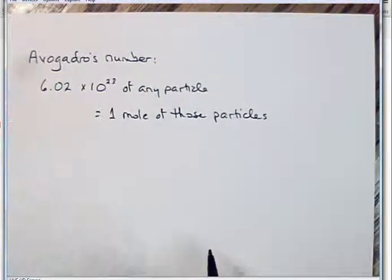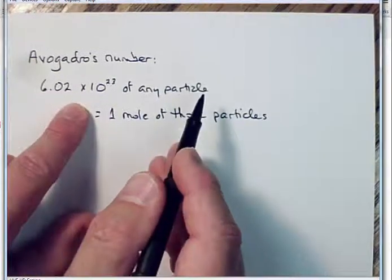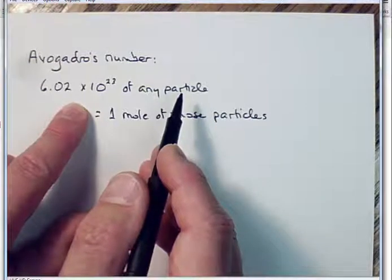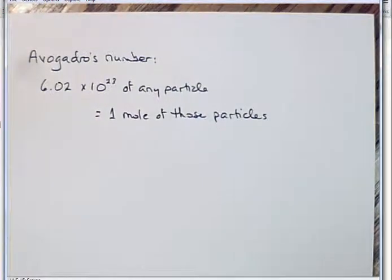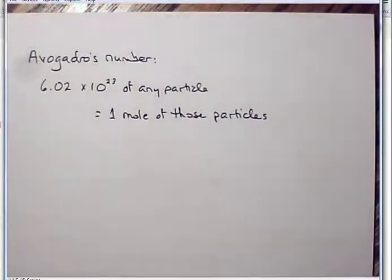So if I have 6.02 times 10 to the 23rd molecules of water, what do I have? I have a mole of water. If I have 6.02 times 10 to the 23rd electrons, what do I have? Come on, you guys can see this. You know what this is. If I have 6.02 times 10 to the 23rd electrons, how many do I have? What do I have? A mole of electrons.